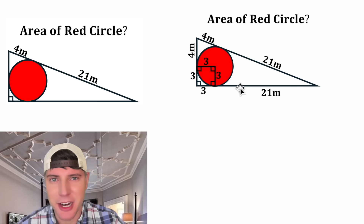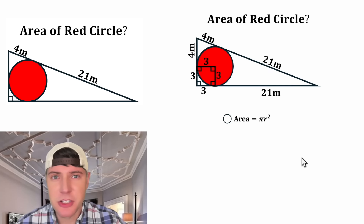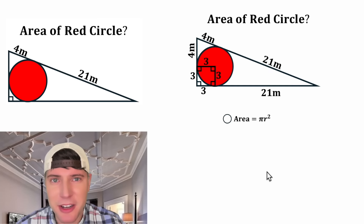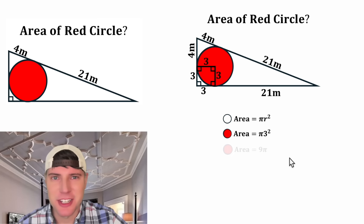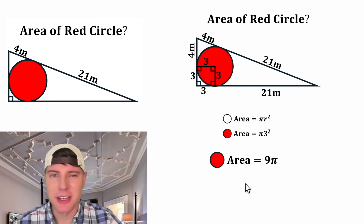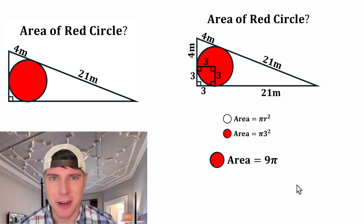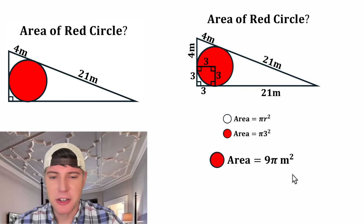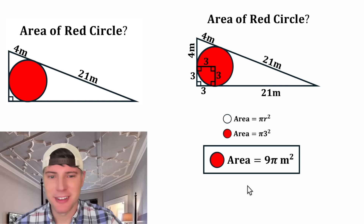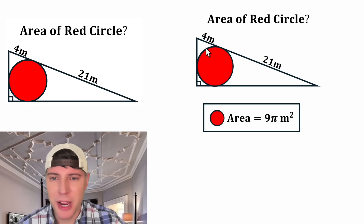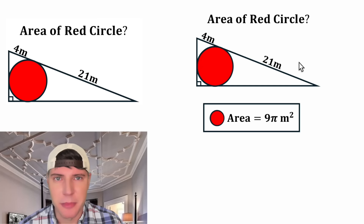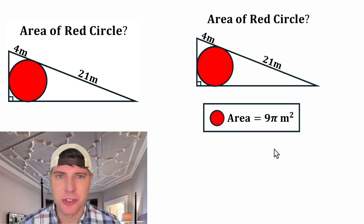Now we're ready to find the area of the red circle. The area of a circle equals πr². So the area is π × 3² = 9π. The area of the red circle is 9π meters squared.